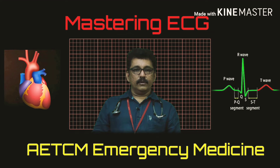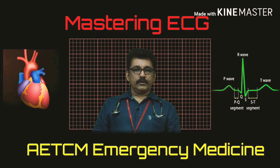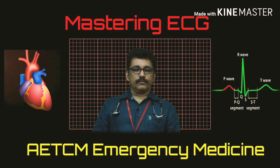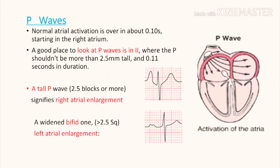In lead 2, P-waves are always upright with a dome shape. Height is 2.5 divisions and width is 2.5 to 3 divisions. P-waves originate from the atrium or SA node during atrial activation.